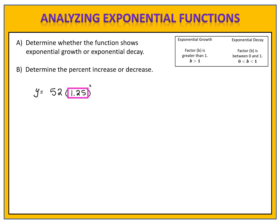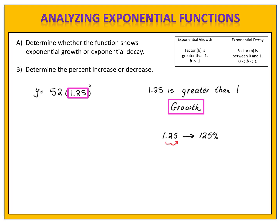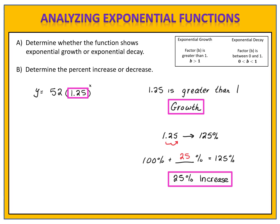Let's compare answers. We begin by looking at the factor, 1.25. The factor is greater than 1, so we have an exponential growth function. Now we have to determine the percent of increase or decrease. The factor is 1.25, which is 125%. We started with 100%, we added some amount to it, and we ended up with 125%. What did we add to 100% to get 125%? 25%. So our rate of increase is 25%. This function is an exponential growth function with a 25% rate of increase.